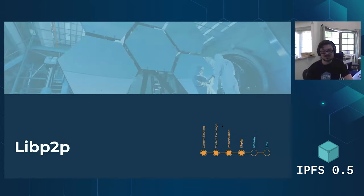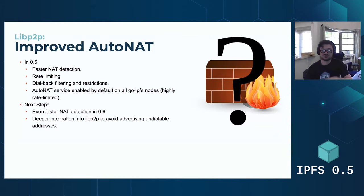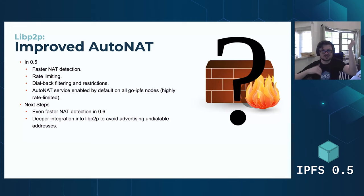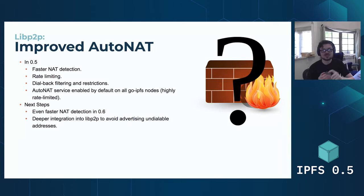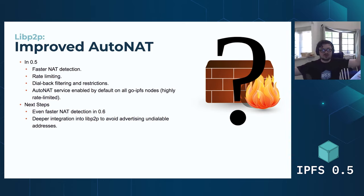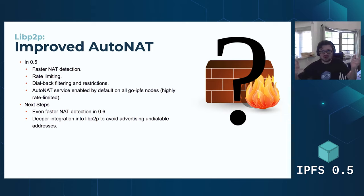Next up, libp2p changes. There are tons of libp2p changes in this release. First up, improved AutoNAT. AutoNAT is our service for detecting if you're behind a firewall — it's a technique to see if you can receive inbound connections and which addresses you can receive inbound connections on. The main improvements are faster AutoNAT detection, a lot of rate limiting, and dial-back restrictions and filtering. We've added all this because we're actually enabling it by default. Now every single node will use the network to determine if they are publicly reachable, and they will also help other peers on the network determine the same — but we don't want to overload people by asking them to do a bunch of work on behalf of the network.